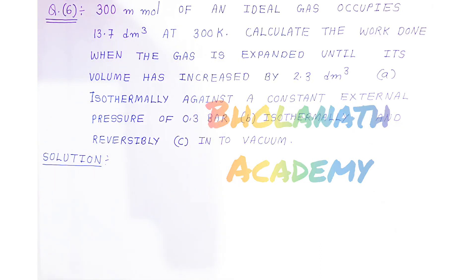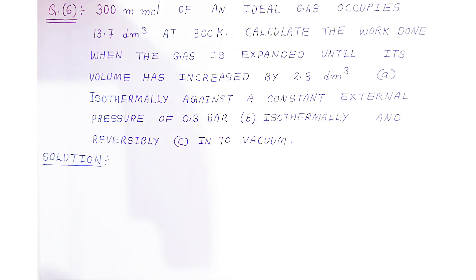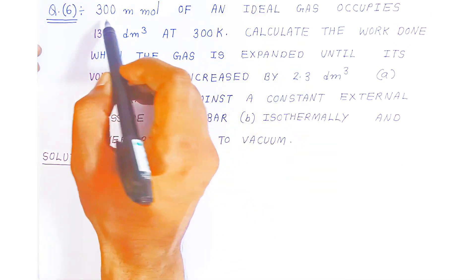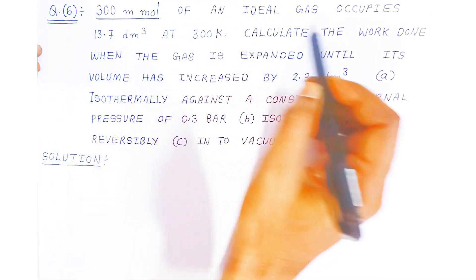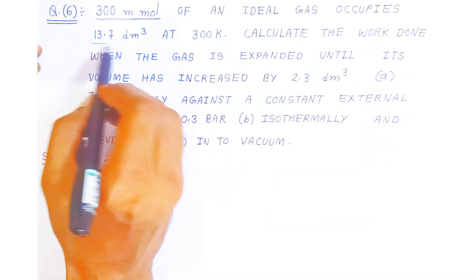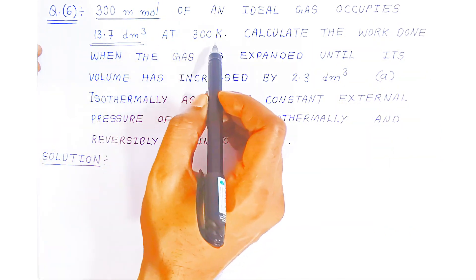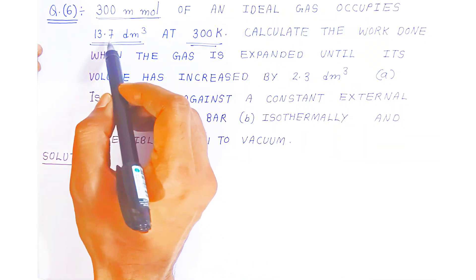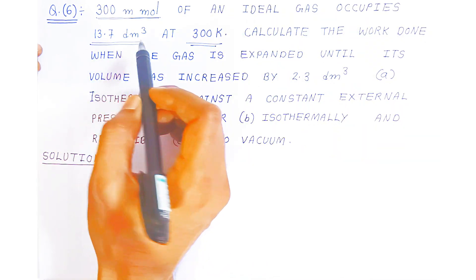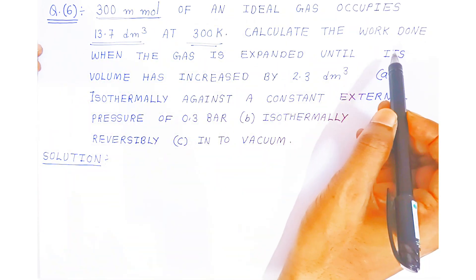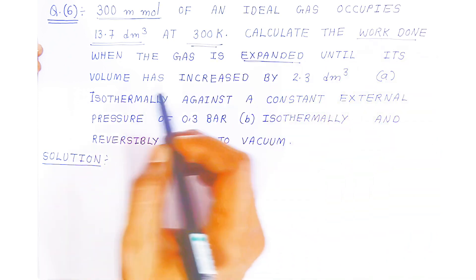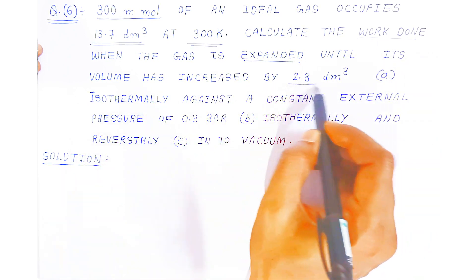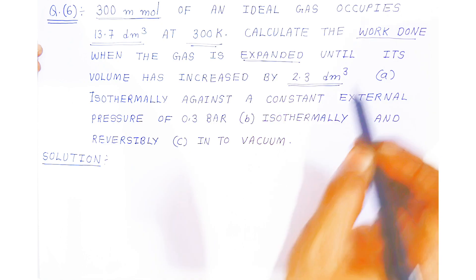Hello students, once again welcome to Bholanath Academy. In this video we are going to see question number six: 300 millimoles of ideal gas occupies 13.7 dm³ at 300 Kelvin. The ideal gas is occupying 13.7 dm³. Calculate the work done when the gas expands until its volume has increased by 2.3 dm³.